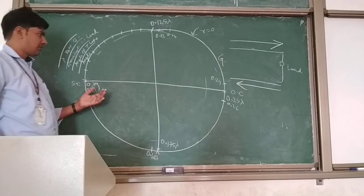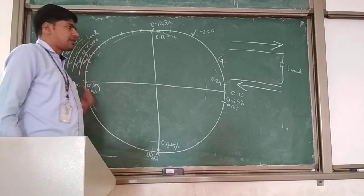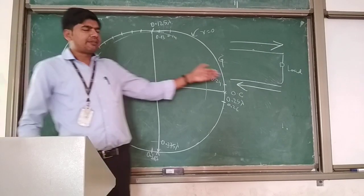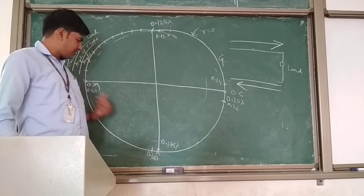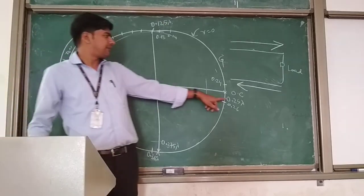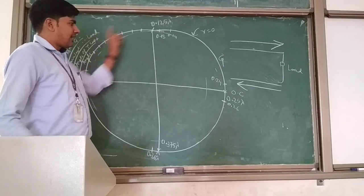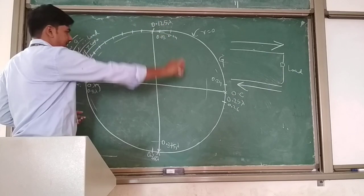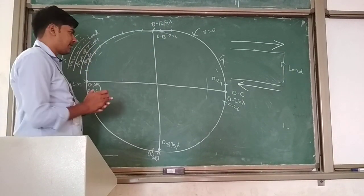This is just equivalent to taking an angle from 0 to 360 degrees. If you take 0 to 360 degrees, 0 and 360 degrees will be on the same point, and 180 degrees will be on the opposite side, which is half of 360 degrees. Same way, 0.5 lambda and 0 lambda will be on the same point, half of that is 0.25 lambda which is opposite. This is 0.125 lambda, and the lines are divided equally so that you can find your current position.